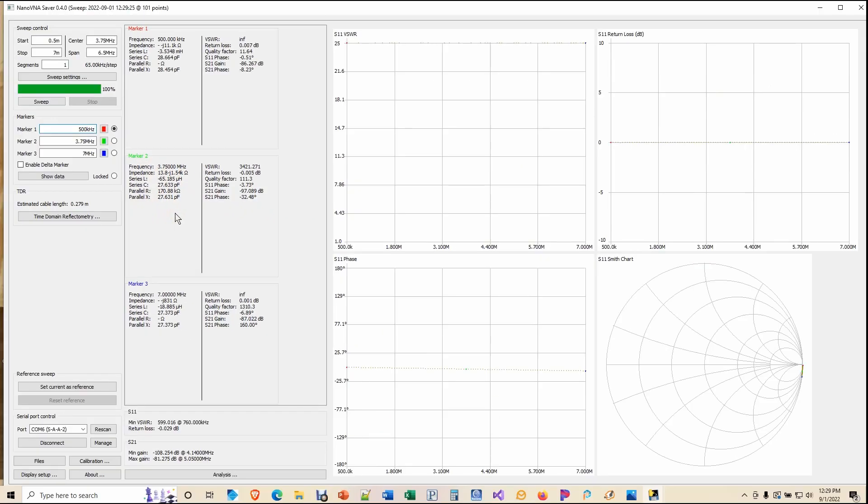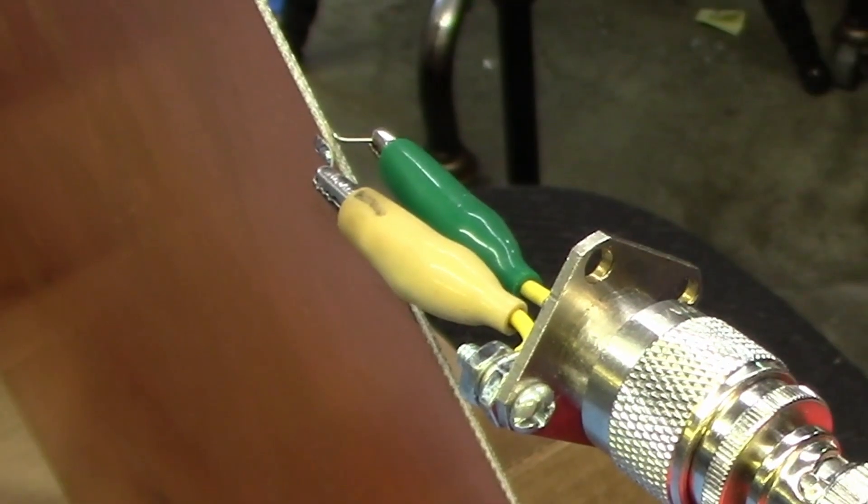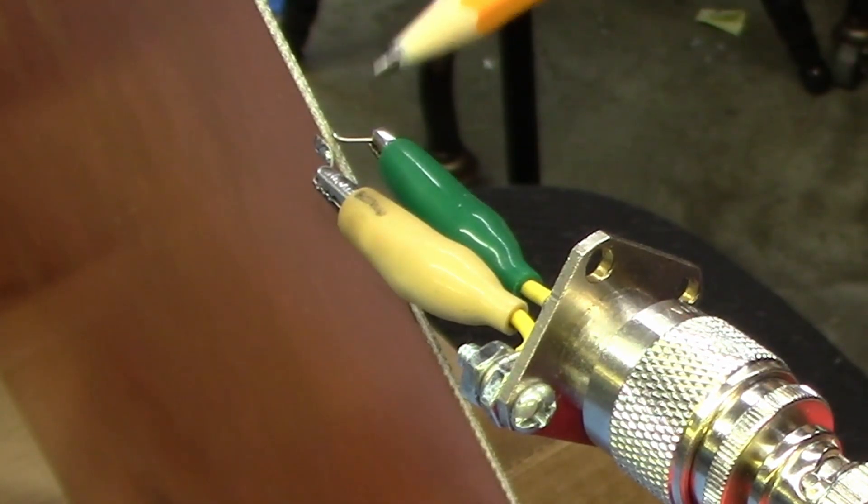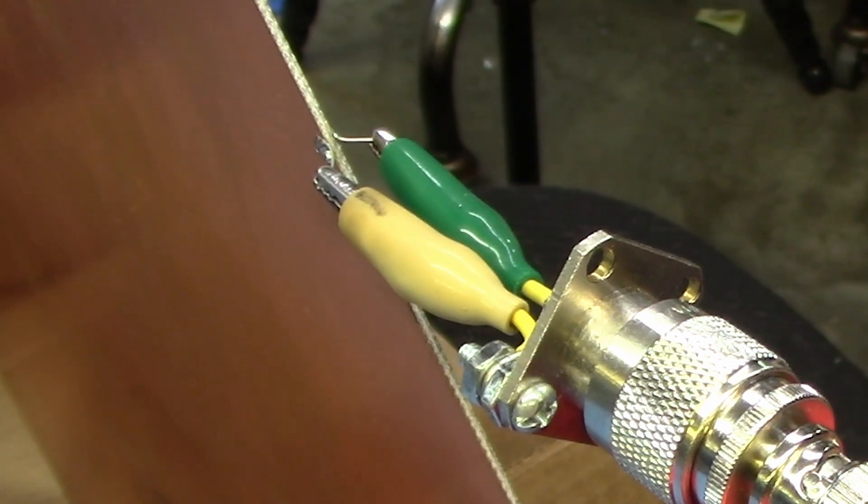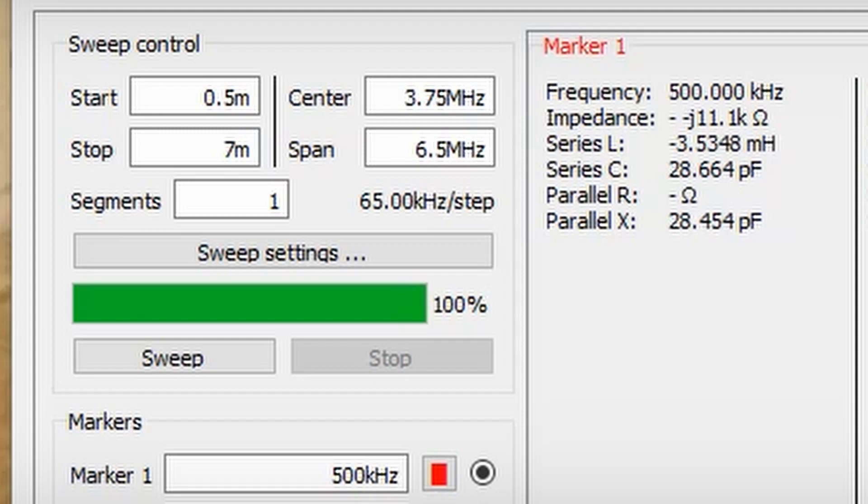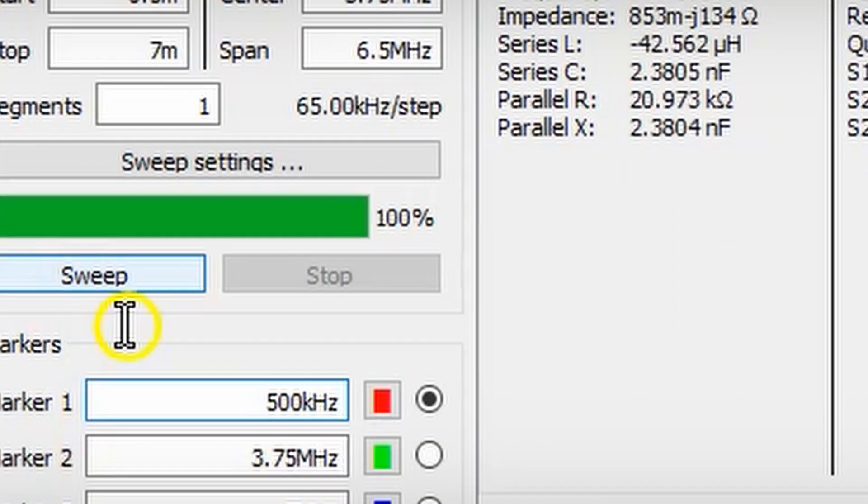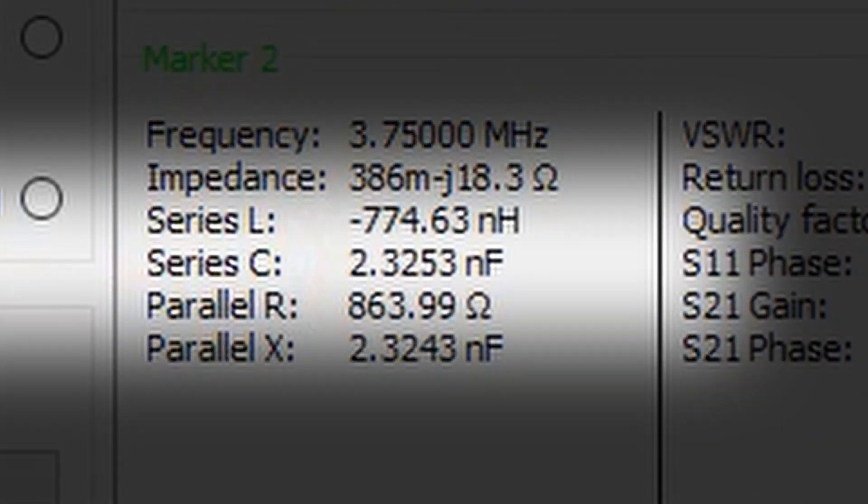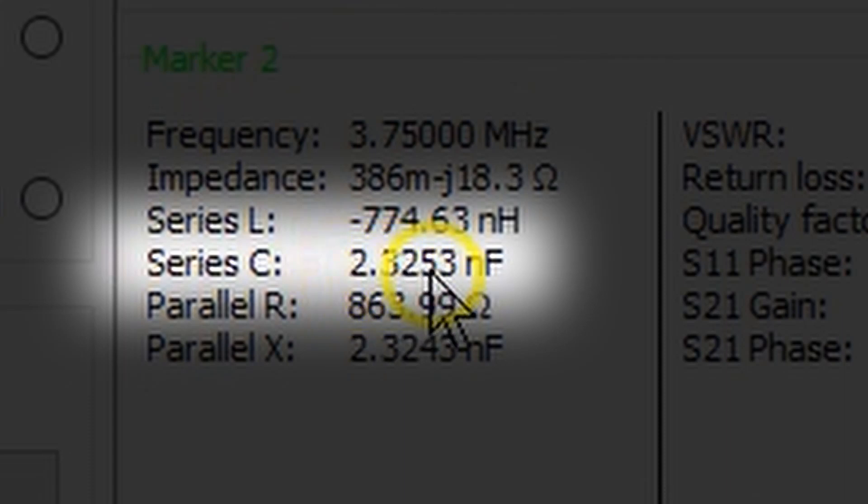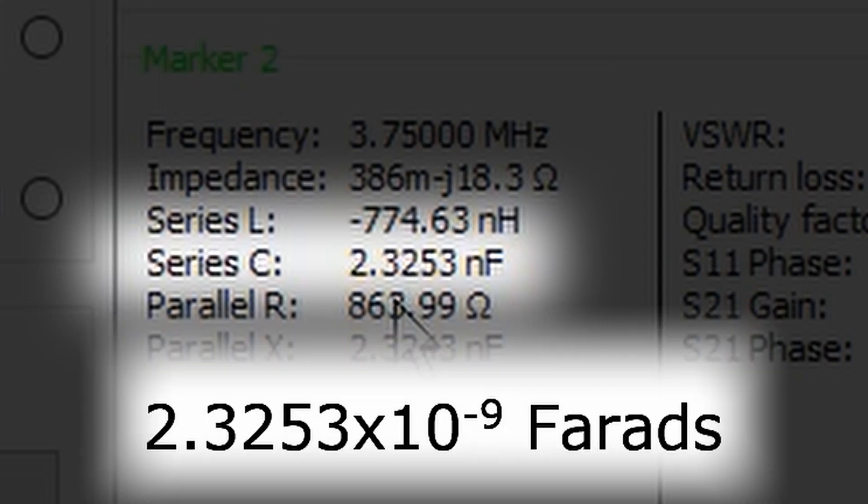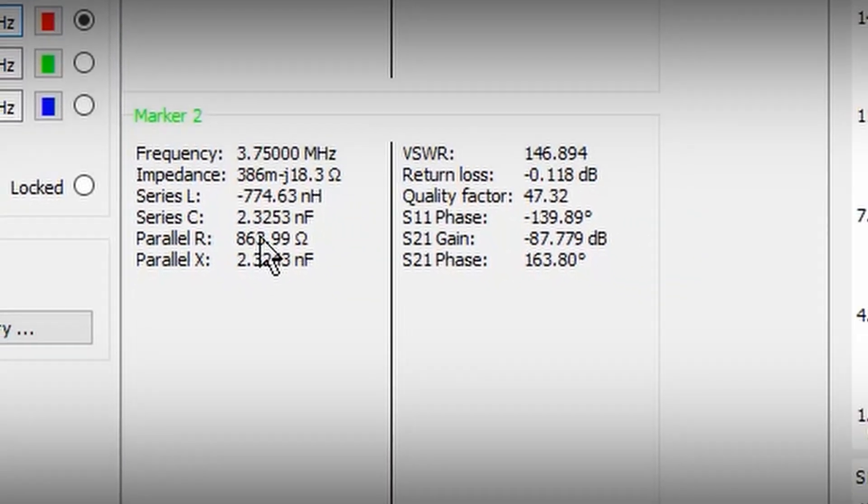Now, with that said, we are ready to go and measure our PCB material capacitance. We connect the VNA to our little wire pigtails that we soldered to the PCB material, as you can see right here. And now we can scan and see what we get. We do our sweep. And here at 3.75 megahertz, we find that we have 2.3253 nanofarads. Now we need that in farads. So that turns out to be 2.3253 times 10 to the minus 9 farads. Now, I don't know about you, but I was kind of surprised at how much capacitance this thing had.